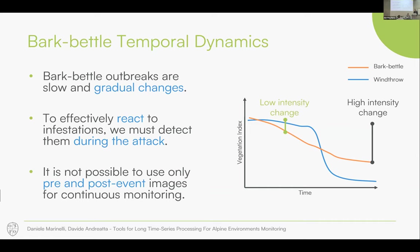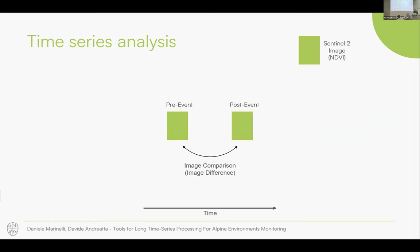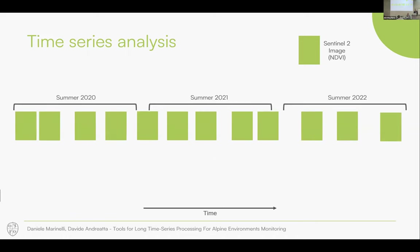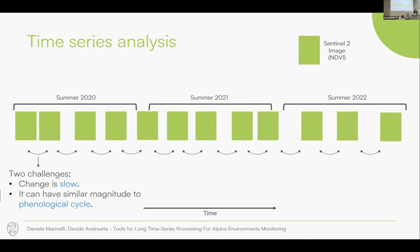In the middle of the attack, the situation gets much more complicated because you have a low-intensity change — subtle variations in spectral intensity. You risk being in a condition where the variation you are trying to detect is comparable to the natural variation of the trees. Such monitoring cannot be performed with the classical approach of comparing two images, also because you don't know when bark beetle is occurring, so you don't have a defined pre- and post-event image. You need to exploit the full information contained in the time series.